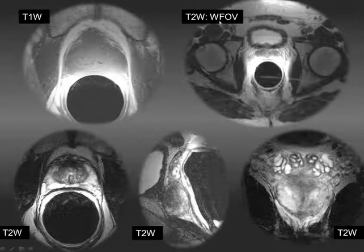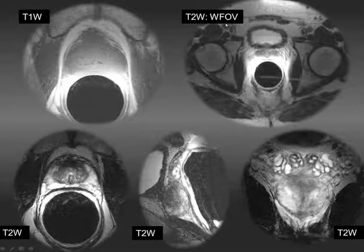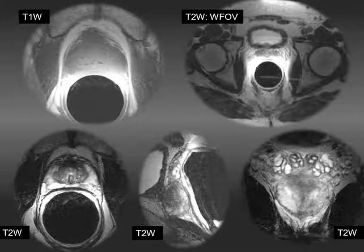We then do a T2-weighted wide field-of-view axial image extending from the pubic symphysis to the aortic bifurcation. The reason for this is that the goal is not only to look at the prostate but also to assess regional lymph nodes and additional findings. We prefer to detect lymph nodes on T2-weighted sequences rather than T1-weighted sequences.